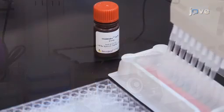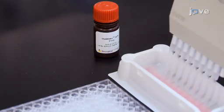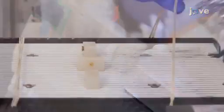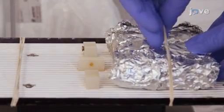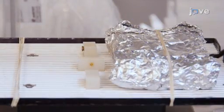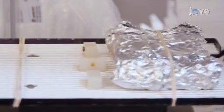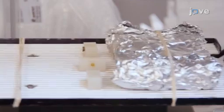Without vacuuming, add 25 microliters of streptavidin phycoerythrin reagent directly to each well. Seal and wrap the plate as before. Then place the plate on a plate shaker and shake at approximately 500 RPM for 30 minutes at room temperature.